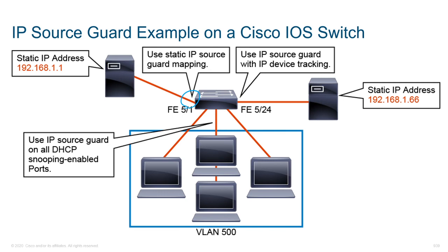Here are some examples of either using static IP mappings — for example if you have a server — or enabling IP Source Guard with device tracking. You can also do that on any of your other interfaces if necessary.